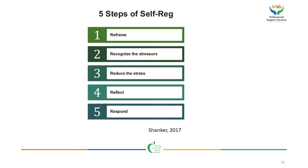Stuart Shanker talks about five steps of self-regulation. The first is to reframe the behavior. The second is to recognize the stressors for the student. The third is to reduce the stress within the classroom environment. The fourth is to reflect upon your own practice and strategies. And the fifth is to respond.